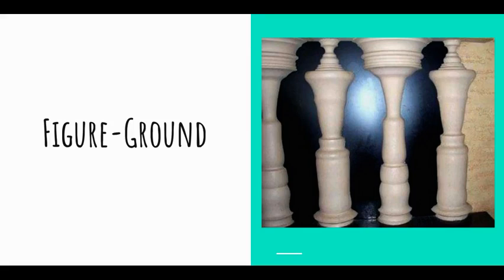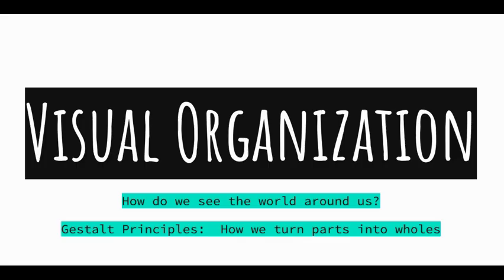This ties back to the idea of selective attention. Visually, with selective attention, we can't focus on two things at the same time. We focus on one and the other pieces become the ground, and then we can switch — the background can become the figure and everything else becomes the background.